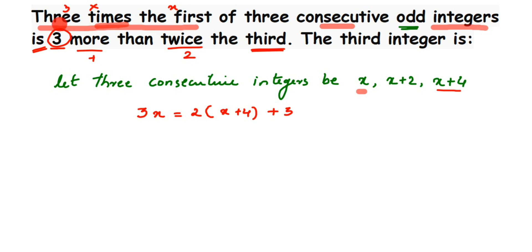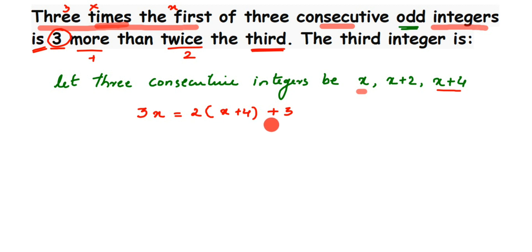Three more than twice the third means we add 3 to twice the third number, so the equation is 3x equals 2(x plus 4) plus 3. Now I open the bracket: 2 into x is 2x, and 2 into 4 is 8, so 3x equals 2x plus 8 plus 3.